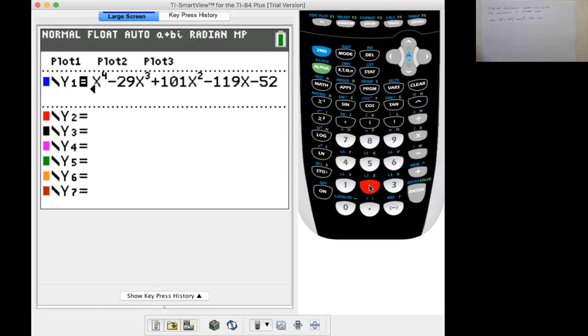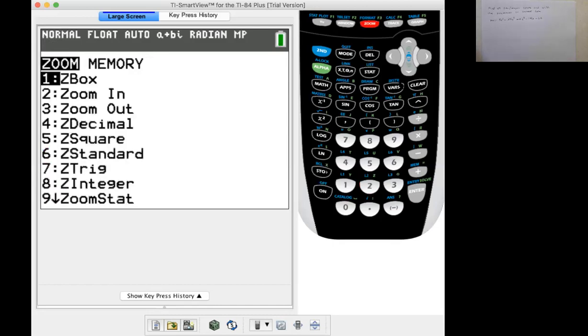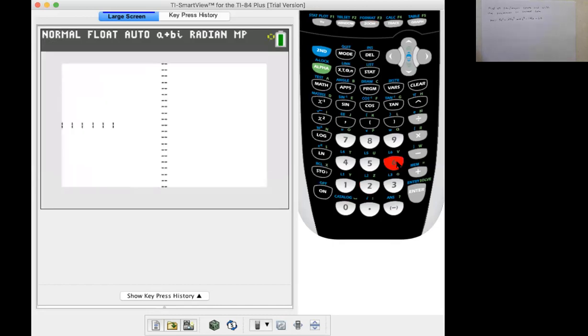I want to find one or two of the zeros if I can. Let me go to zoom standard first and see if any of the zeros show up here. Do I see any places where it crosses the x-axis? Got one, two places.